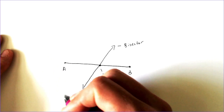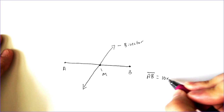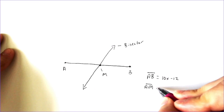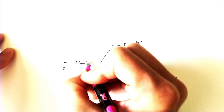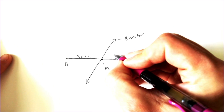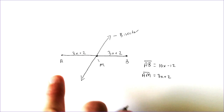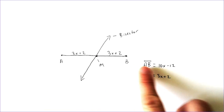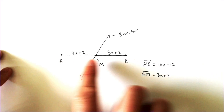In this case, I'm going to tell you that AB — the whole length of A to B — is equal to 10x minus 12. And I'm going to tell you that A to M is equal to 3x plus 2. So that means this short part right here is 3x plus 2. If point M is the midpoint, then this other part is also 3x plus 2, and the whole way across from A to B is the 10x minus 12.